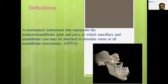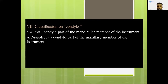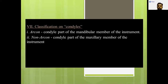Classification of articulators — arcon versus non-arcon — is very important, as this question has been asked many times. In an arcon articulator, the condylar element or the condylar path is present in the lower component, whereas the condylar guidance is present in the upper component.